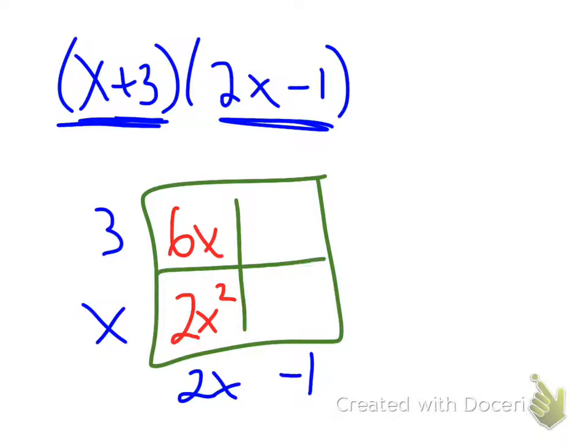This box here, I'm going to have x times negative 1 for a negative x. And then the last box right there is negative 1 times 3 for a negative 3.